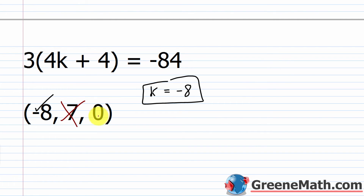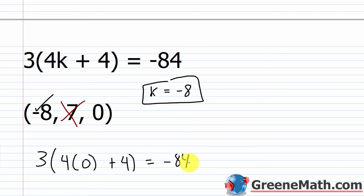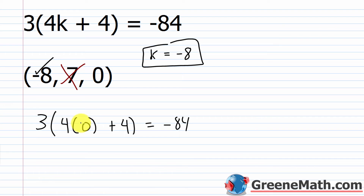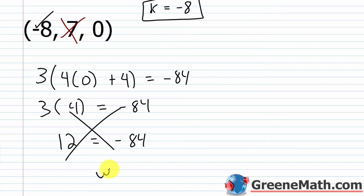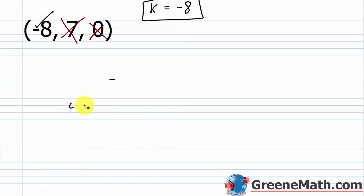The last value to try is k equals 0. Plugging in: 3 times the quantity 4 times 0 plus 4 equals negative 84. 4 times 0 is 0, then 0 plus 4 is 4. So I'd have 3 times 4 equals negative 84. 3 times 4 is 12, and 12 does not equal negative 84 — the left and right side are not the same. So 0 is not a solution, and only k equals negative 8 works in this equation.